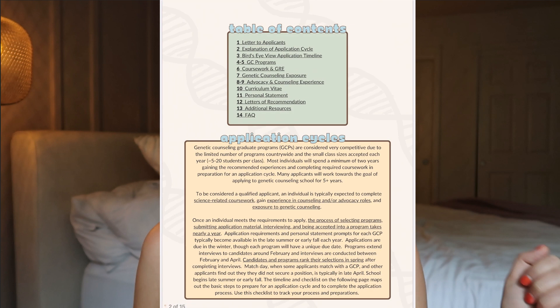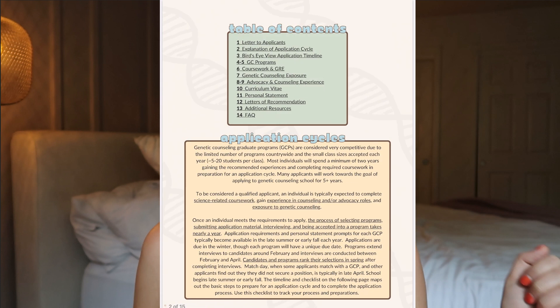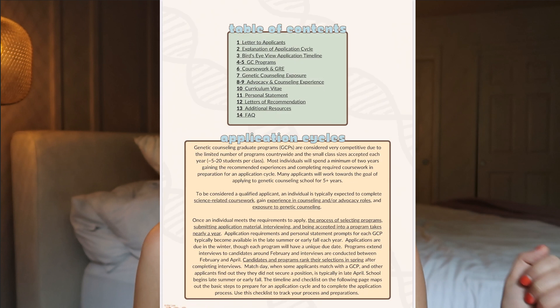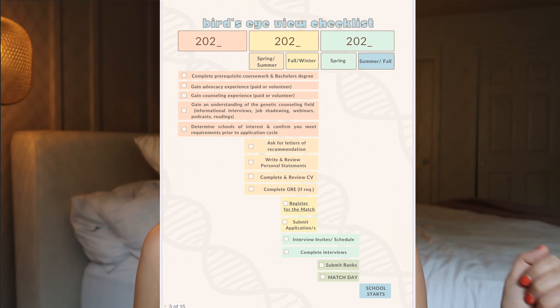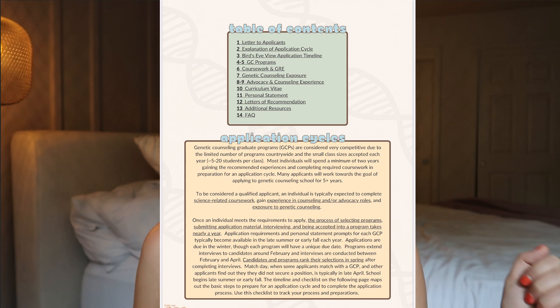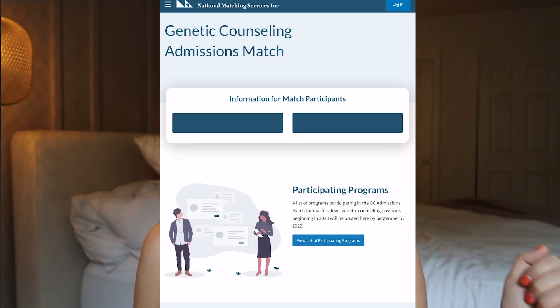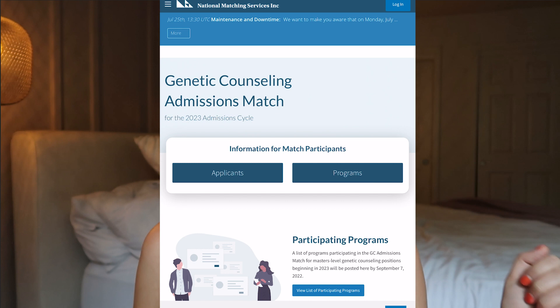There's a little bit of a letter explaining the process and a table of contents. You've got an explanation of how the application cycles work. The cool thing about this is every time you see something underlined, that is a link. Some of the links are linked within this 15-page guide to help you stay organized, and others are links to outside websites — like this one links to the GC Match website.